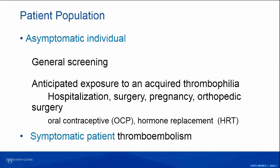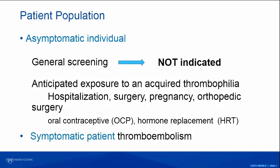There are two broad groups of patients one typically considers for testing: the asymptomatic patient and the symptomatic patient with venous thrombosis. Among asymptomatic patients, general screening is not indicated — you don't screen somebody walking in your door without thrombotic problems. What about patients who haven't developed a thrombus but may be exposed to an acquired risk factor such as hospitalization, surgery, pregnancy, or orthopedic surgery, which is very high risk for thrombosis?